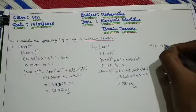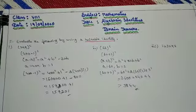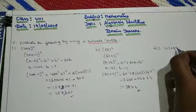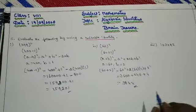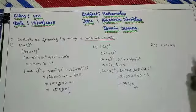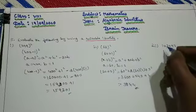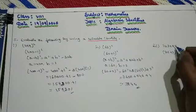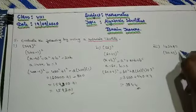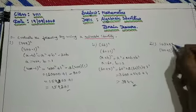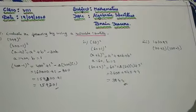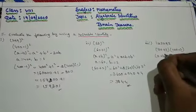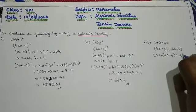So 103 into 97. This question is very important children. Please don't multiply directly — you are 8th standard, you need to use the identity. 103 is a three-digit number nearest to 100. So 100 plus 3 is 103, and 100 minus 3 is 97. These two expressions are the same with opposite signs. That is nothing but A plus B into A minus B, which equals A square minus B square.